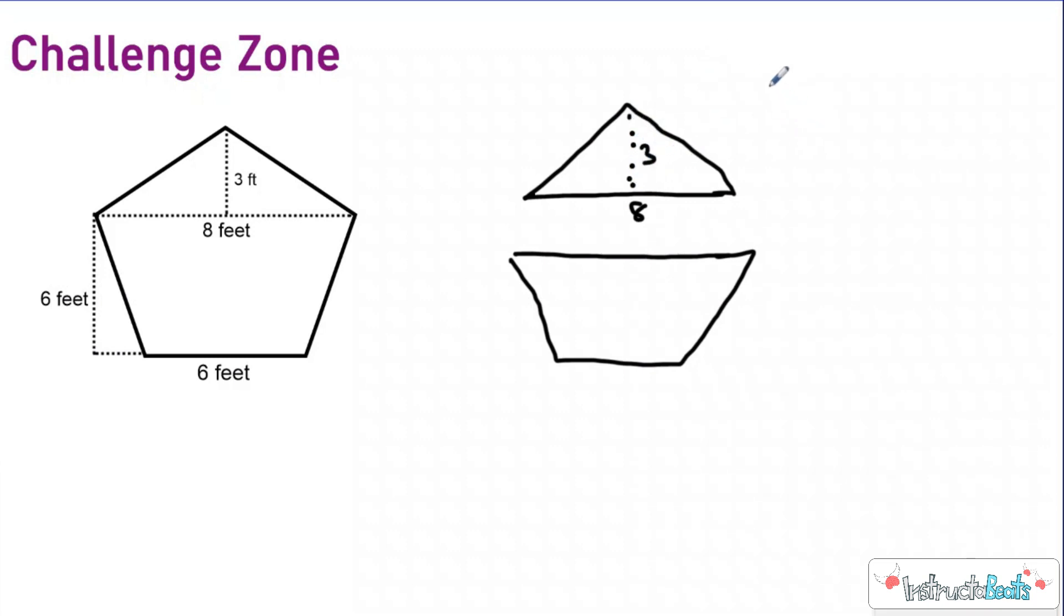So if we do one half base times height here, one half, eight times three, we're going to get an area of 12 feet squared. So the top part is pretty easy.